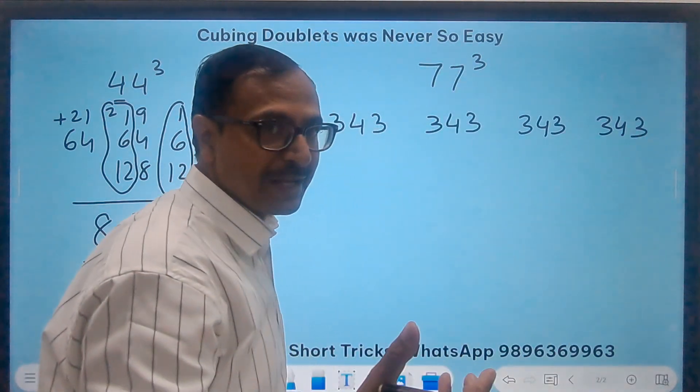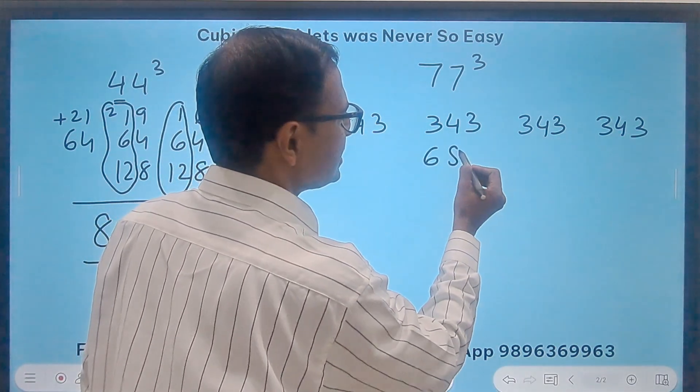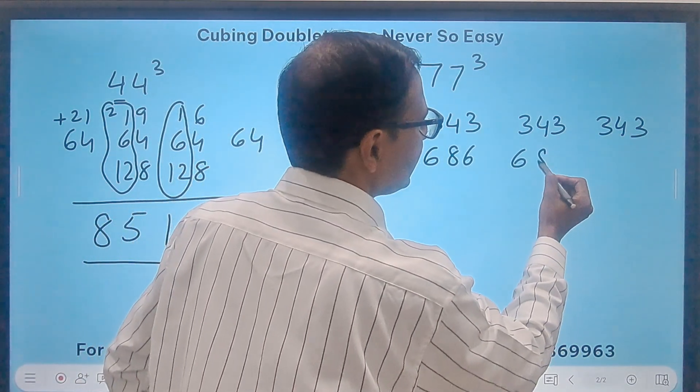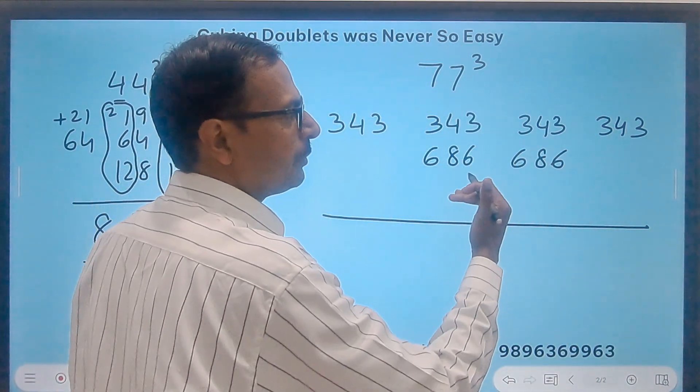Now this is going to be a little tricky. Because you will have big three digit numbers. So double of this is 6, 86 and 6, 86. So I will leave some space here in between.